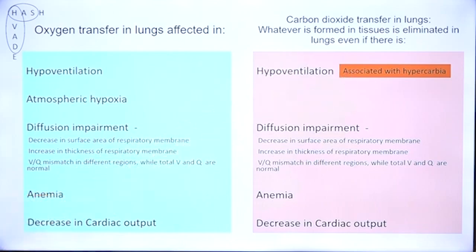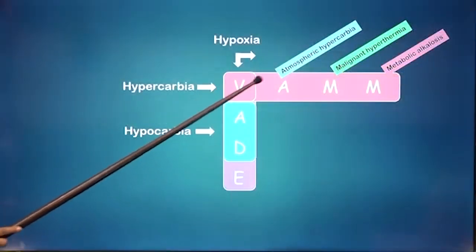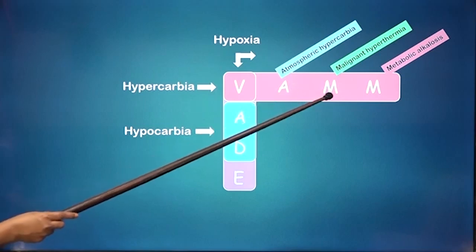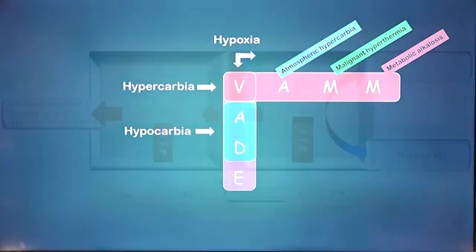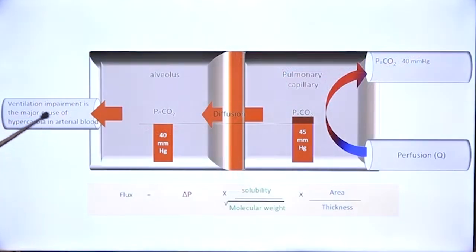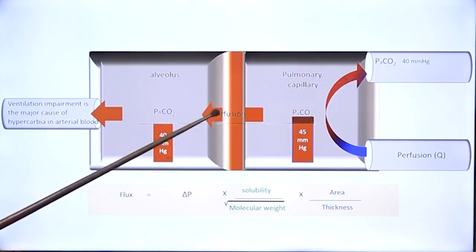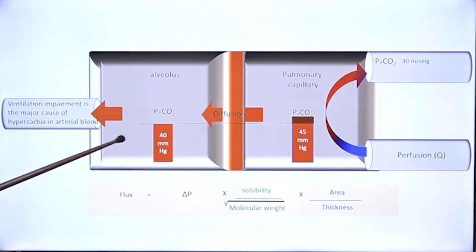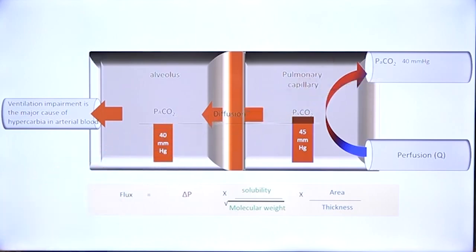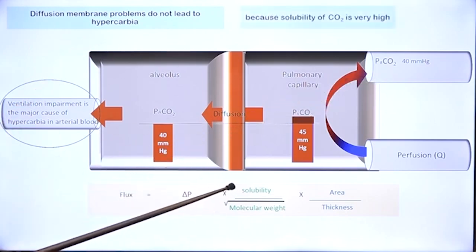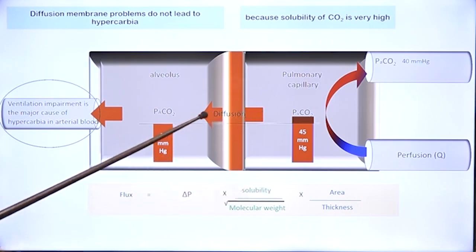There is hypoxia and hypercarbia in type 2. In addition to ventilation impairment, we considered three other situations where there can be hypercarbia: atmospheric hypercarbia, malignant hypothermia, and metabolic alkalosis. In summary, ventilation impairment is the major cause of hypercarbia in arterial blood. Diffusion impairment does not affect either the amount of CO2 that must move out or arterial PCO2. The standard teaching is that diffusion membrane problems do not lead to hypercarbia because the solubility of carbon dioxide across the respiratory membrane is very high.